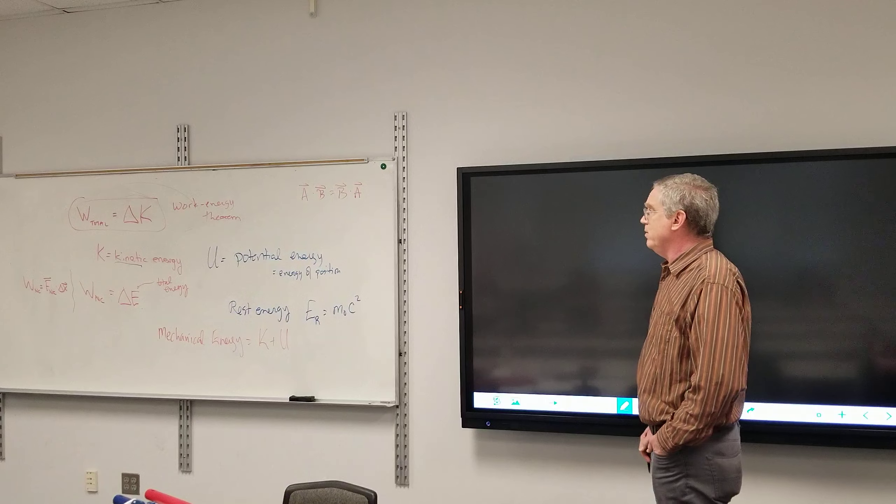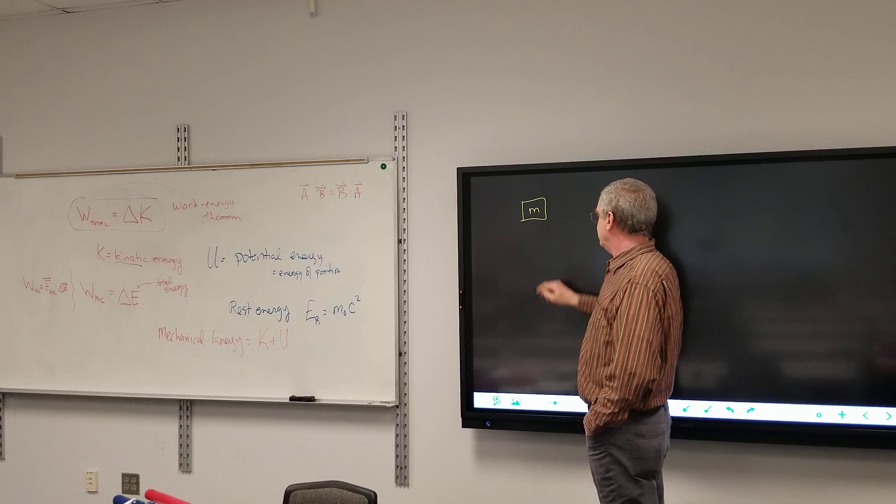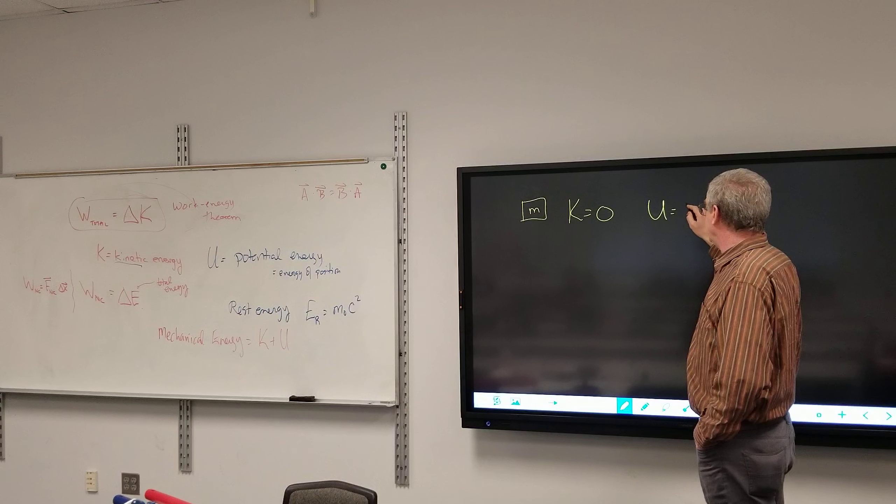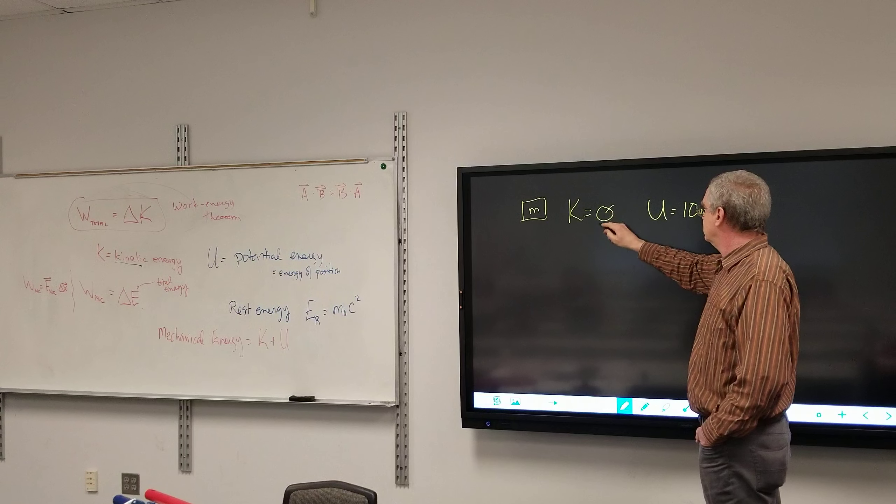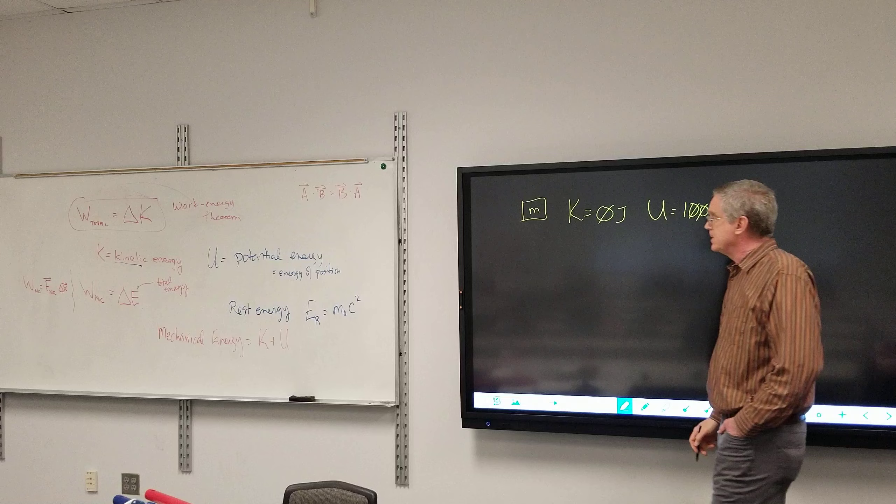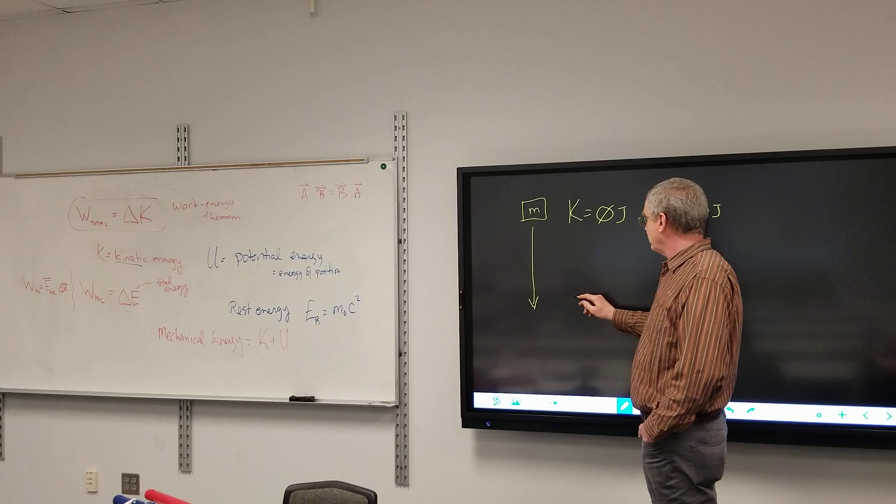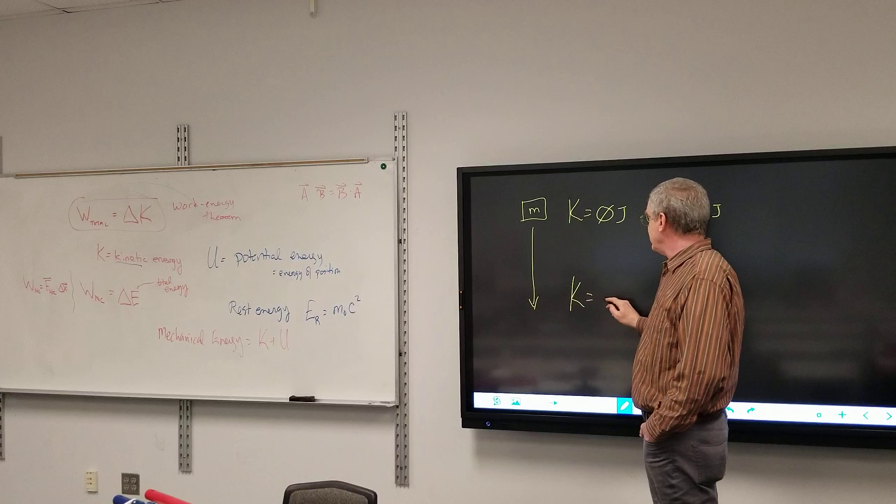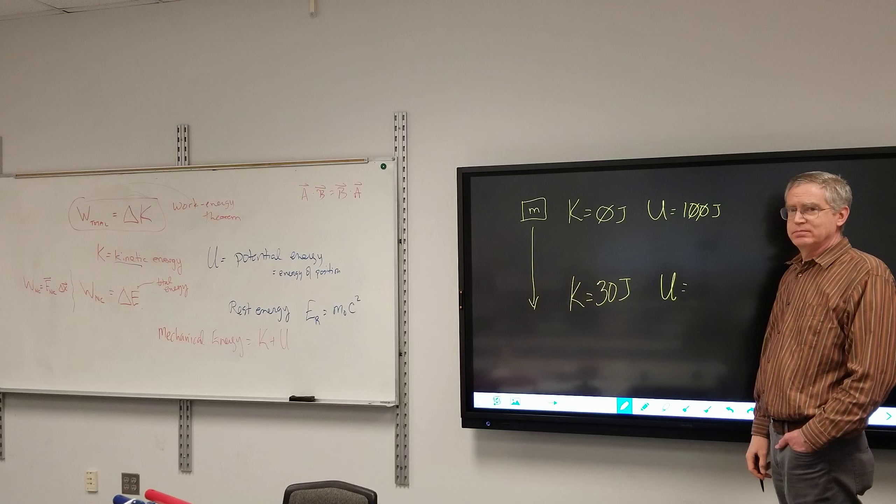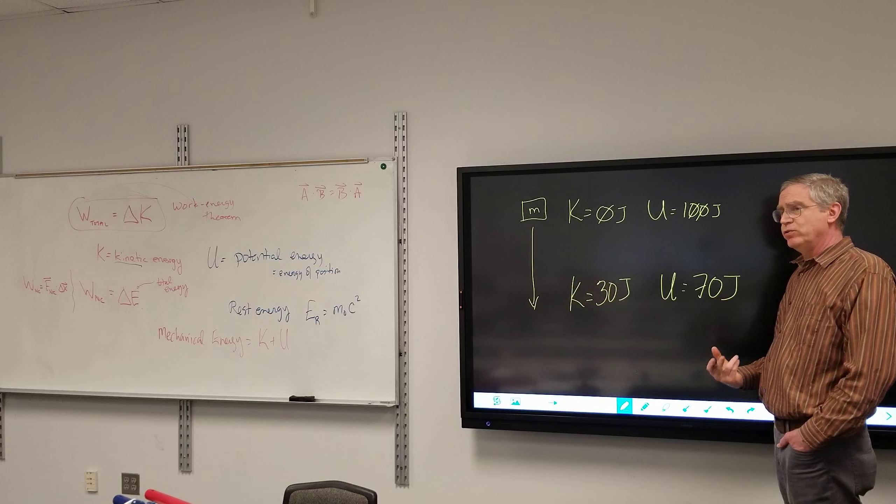All right, let's go through a scenario. I have an object here with mass M. The kinetic is zero and the potential energy we'll just say is 100 joules. Joule being a unit of energy. It falls because of the gravitational force pulling on it. At this point right here, the kinetic energy is 30 joules. What is the potential energy? 70. Because the total stays constant.